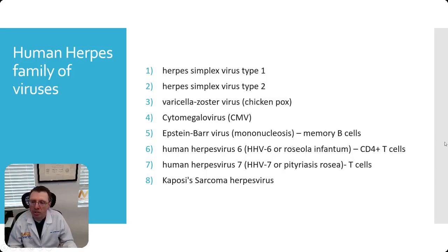So what is the herpes family of viruses in humans? Well, there's eight of them. There's simplex one and two, there's the varicella zoster which is chicken pox, there's the cytomegalovirus or CMV, Epstein-Barr virus which causes mononucleosis and it hides out in memory B cells. There's also human herpes virus 6 which lives in T cells, the CD4 plus T cells, and herpes virus 7 which also lives in T cells, and the Kaposi sarcoma herpes virus — this one is mainly due to HIV or AIDS.